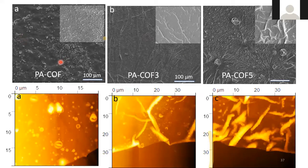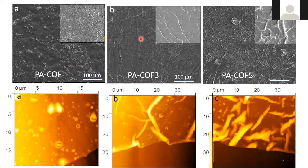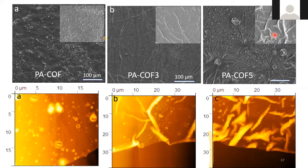SEM images show that the pristine PA membrane is flat, but incorporating COF nanosheets creates surface wrinkles, increasing surface area available for the aqueous solution. More surface area means more water in contact with the membrane, enhancing flux. As COF concentration increases, wrinkle intensity increases. At PA-COF 5 (5% COF relative to piperazine), we achieved a permeance of 45 — a significant result. AFM images are consistent with SEM observations.